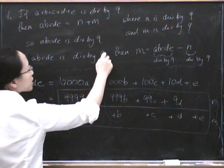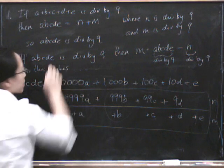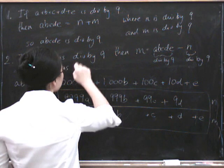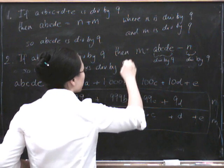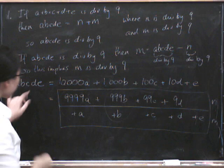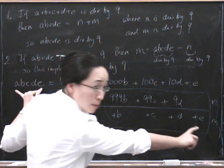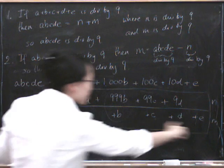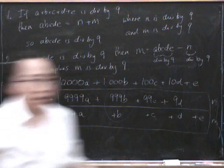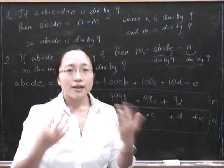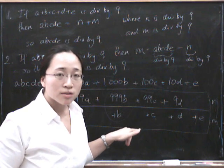So that means that this implies that M is divisible by 9. So what have we done? We've shown that if the whole number is divisible by 9, then the sum of the digits must be divisible by 9. And also that if the sum of the digits is divisible by 9, then the original number must be divisible by 9. So we've shown that this is a precise test for checking whether something is divisible by 9 or not.